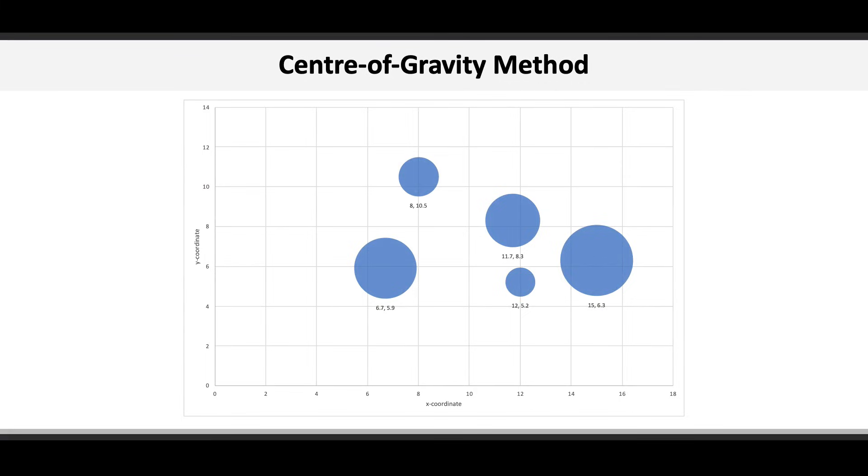11.18, 6.99 is about here. It happens to be close to the center of the customers, but not exactly, and that's because the big areas are exerting their size in opposite directions.